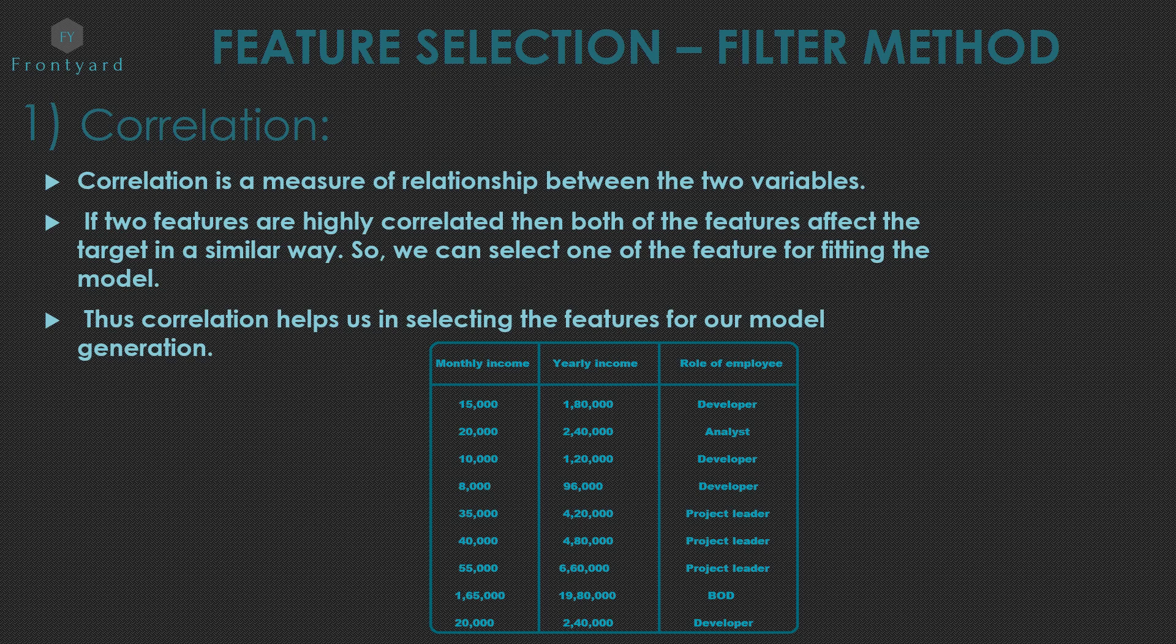If two features are highly correlated, then both of the features affect the target in a similar way. So we can select one of the features for fitting the model. For example, see the below table. Relationship between monthly income and yearly income will be very high. Because the salary I get monthly increases, then the yearly salary will also increase. And both are representing the salary of the person. Both variables are representing the same thing. So you can select any one of the features. Thus, correlation helps us in selecting the features for our model generation.